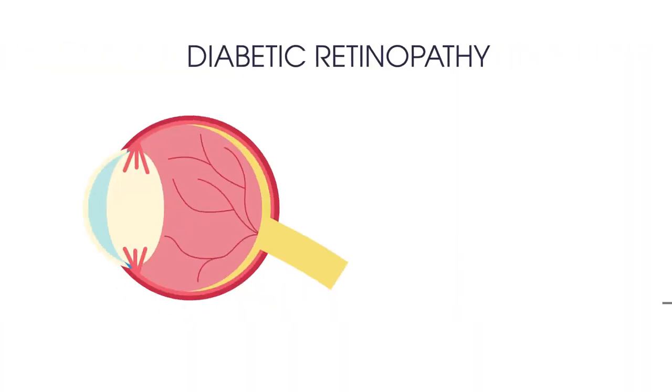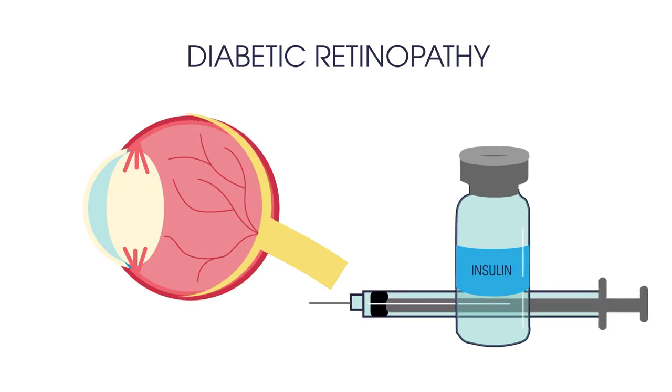Finally, diabetic retinopathy, which is a complication of diabetes caused by high blood sugar levels damaging the retina. The retina needs a constant supply of blood which it receives through a network of tiny blood vessels. Over time, a persistently high blood sugar level can damage these blood vessels.